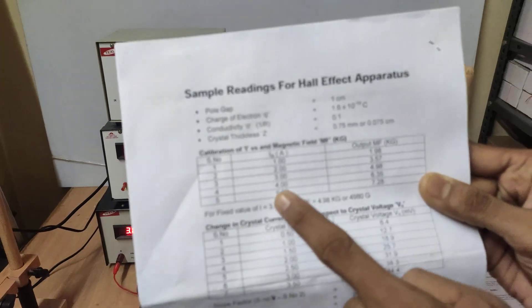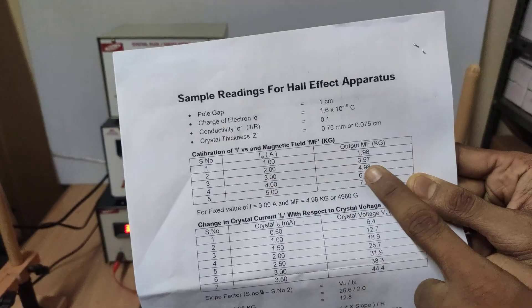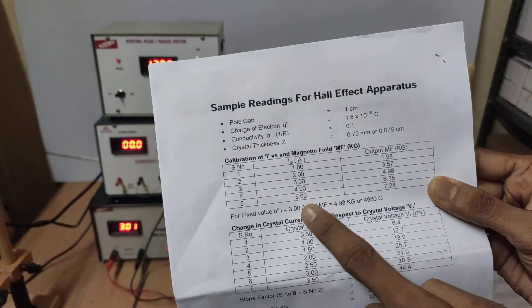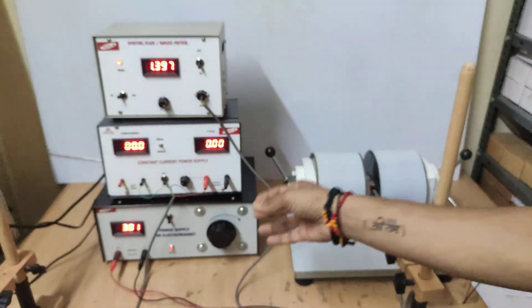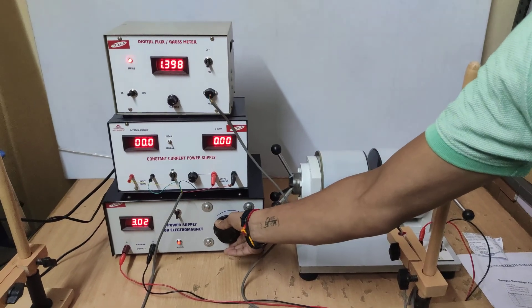Here I have done it for 1 ampere, 2 ampere, 3 ampere, 4 ampere. In this format you have to make down and make a note of it. Like that you can go until 6 ampere.